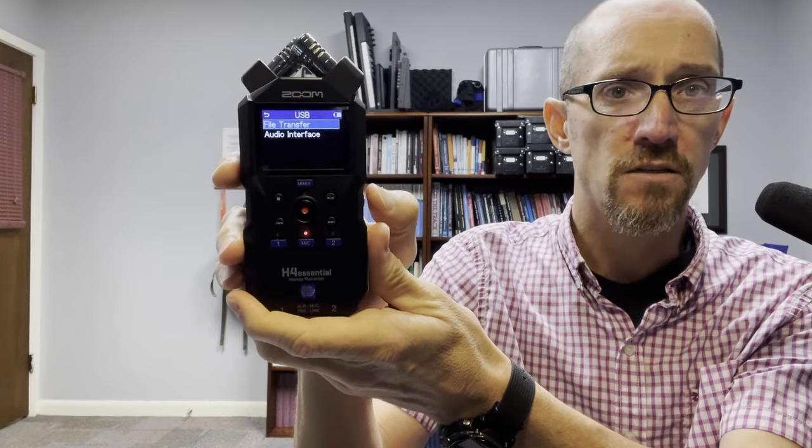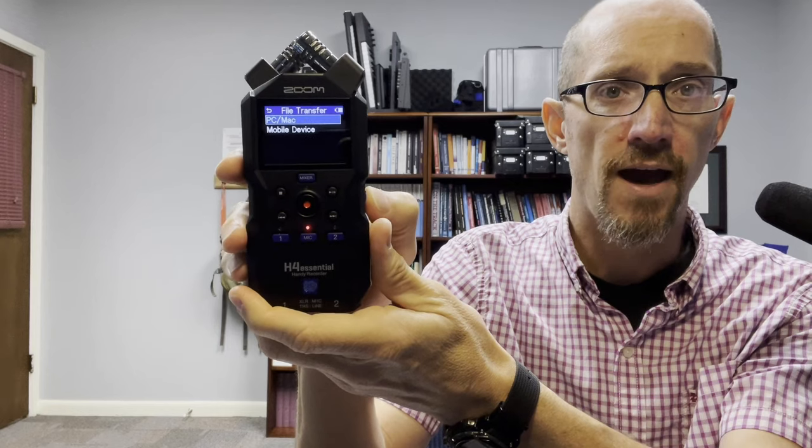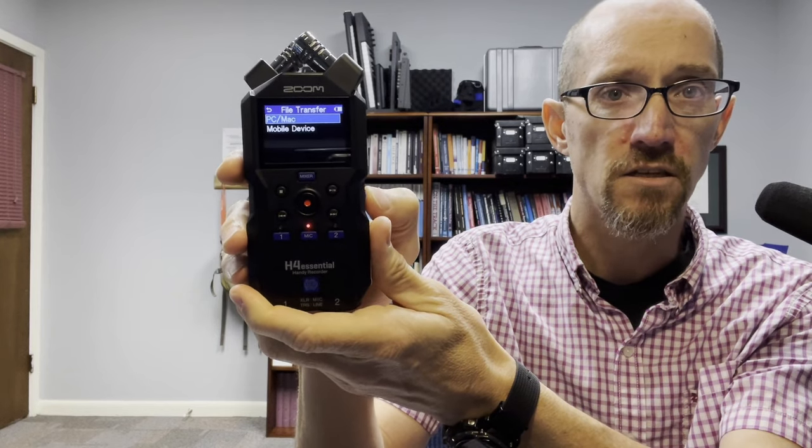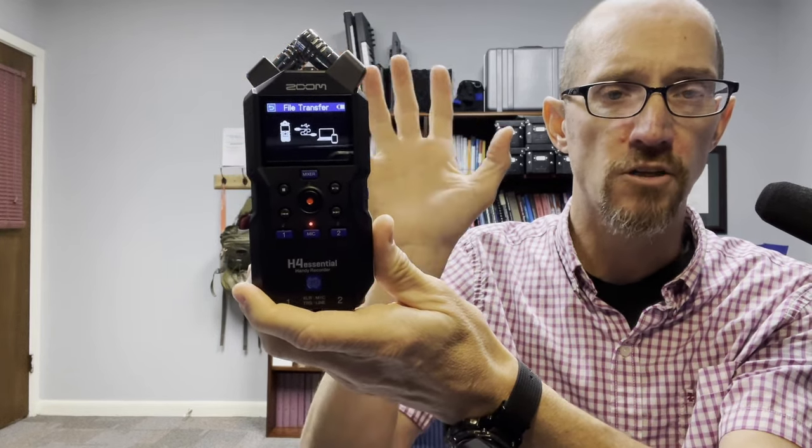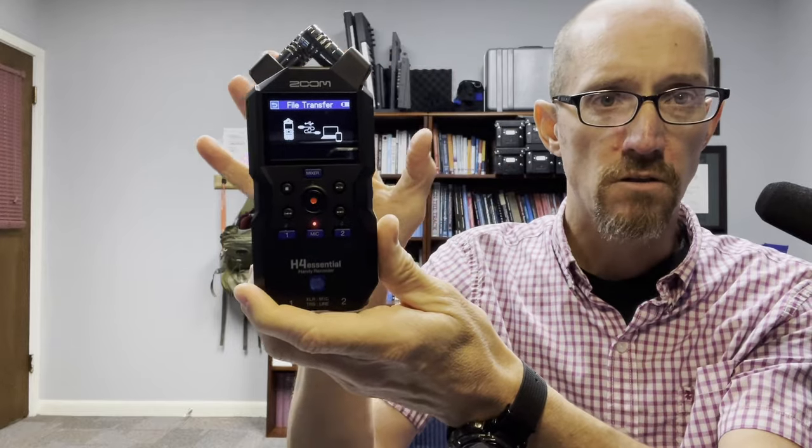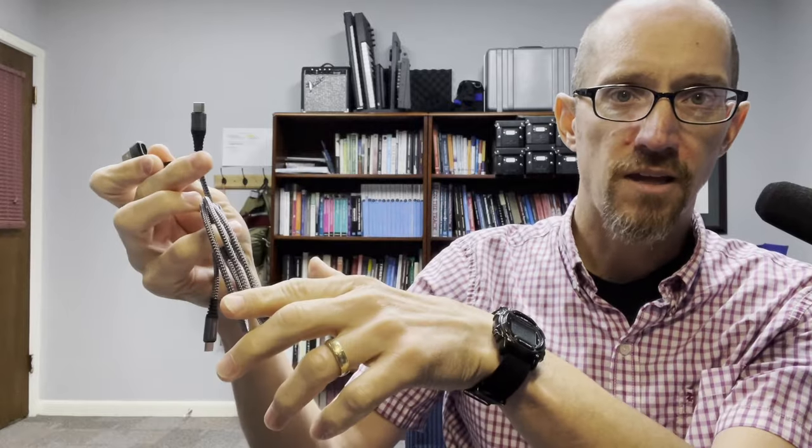You're going to see there's an option that says file transfer. If you click enter on that and click PC Mac, it will put the recorder in a mode where it actually can be connected via USB cable to your computer. In our kit, we've included a USB cable that has one end for USB-C that you would connect to the actual recorder itself. The other end has a little cap on it, where it's USB-C without the cap. And then if you place the cap on it, it'll be USB-A for your older computers and make sure you have the ability to connect those.